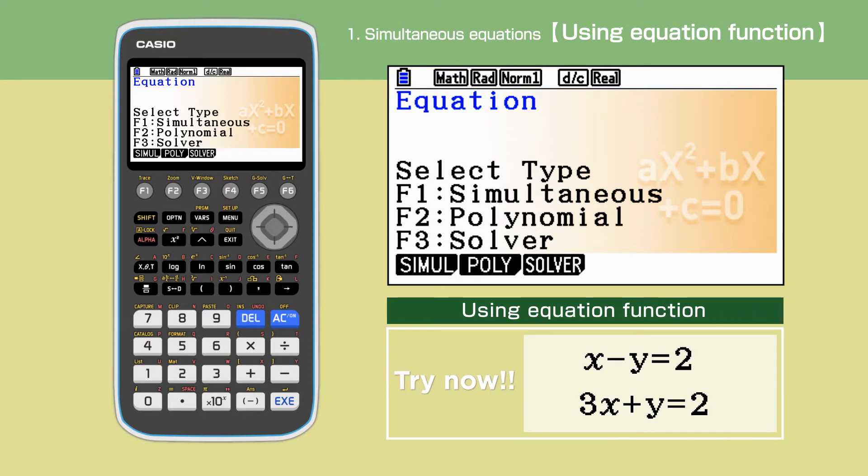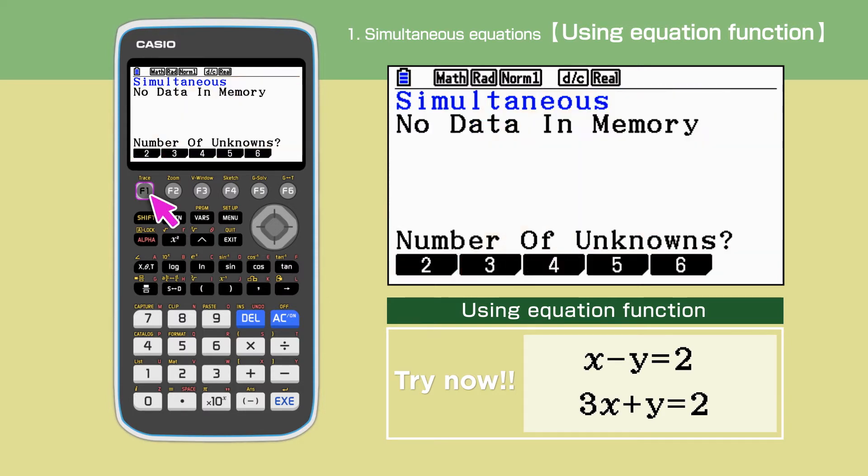First, we will solve simultaneous equations with two unknowns. Press F1 to select simultaneous, then press F1 to select two unknowns.